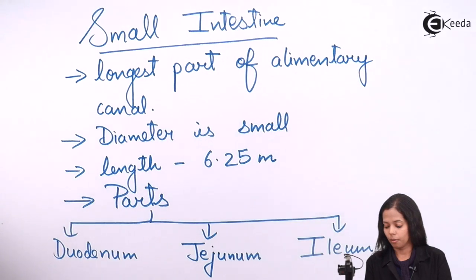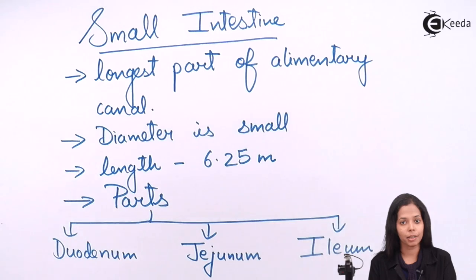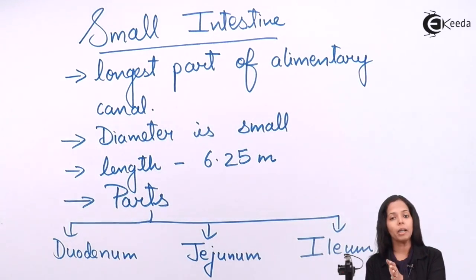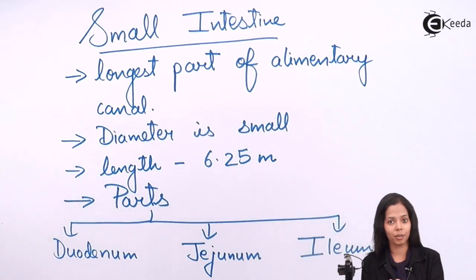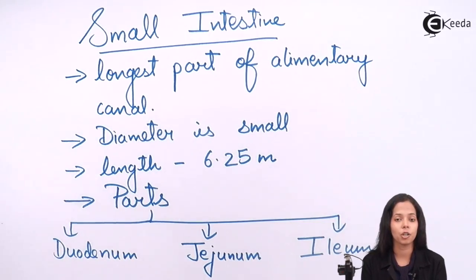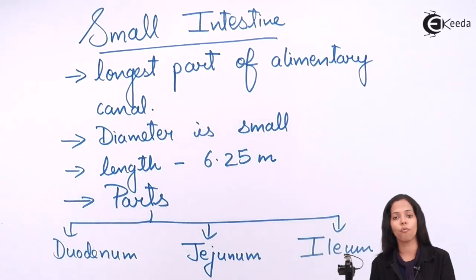Jejunum is the longest part but smaller compared to ileum. It is longer compared to duodenum but smaller compared to ileum. The length of jejunum is 2.5 meters and the length of ileum is 3.5 meters. Duodenum is 25 centimeters. When you add 2.5 meters, 3.5 meters, and 25 centimeters, you get approximately 6.25 meters. This is how the length of small intestine is calculated.